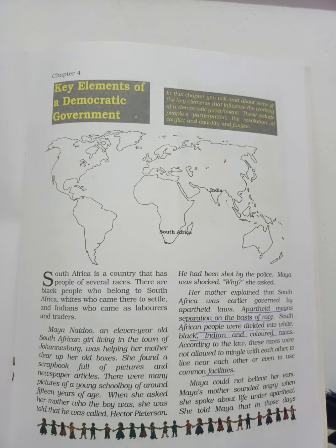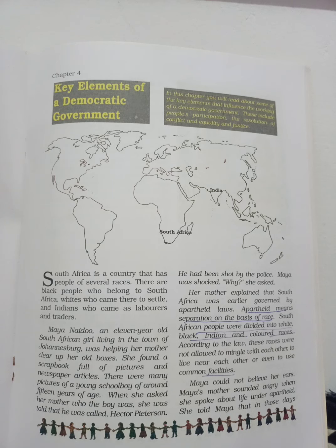The earliest form of government was monarchy where the king or queen ruled a country. He or she enjoyed all the powers. Although helped by advisors, the final decision lay in the hands of the monarch as he or she was all powerful. Slowly, it was realized that the will of the people also matters. Finally, democracy came up as the most popular form of government.